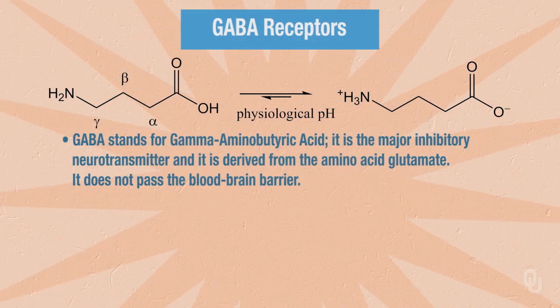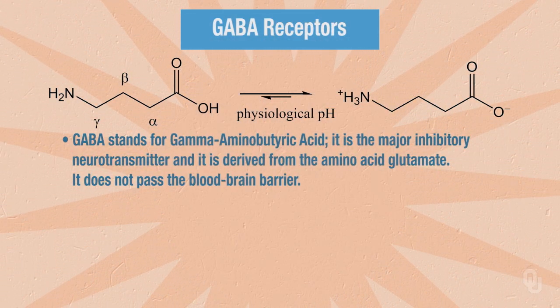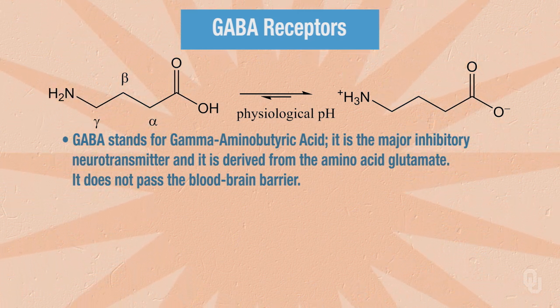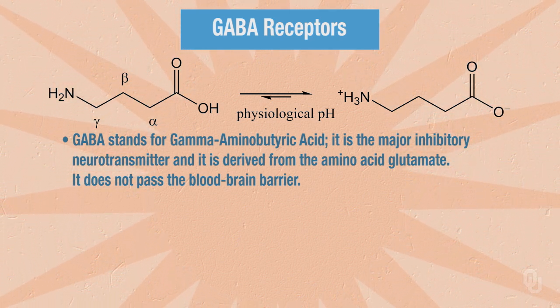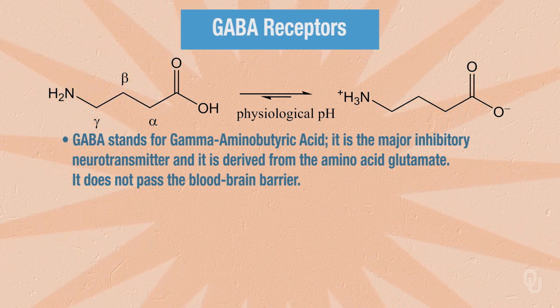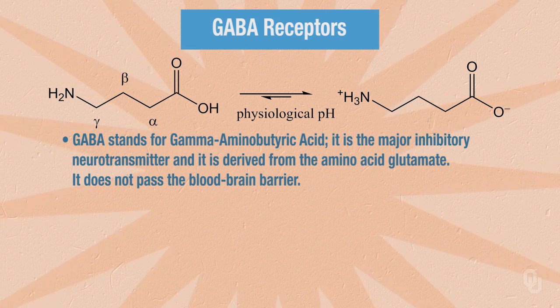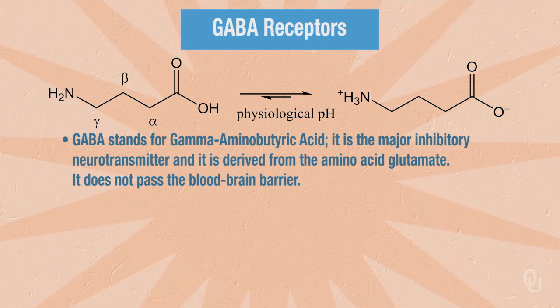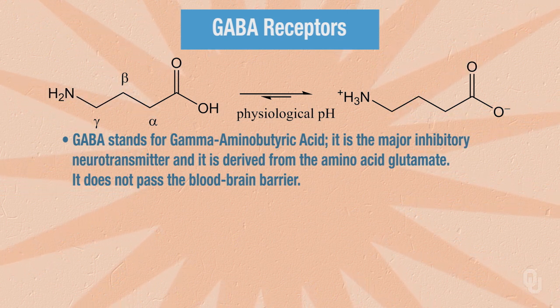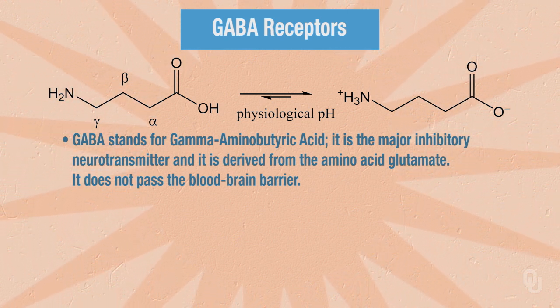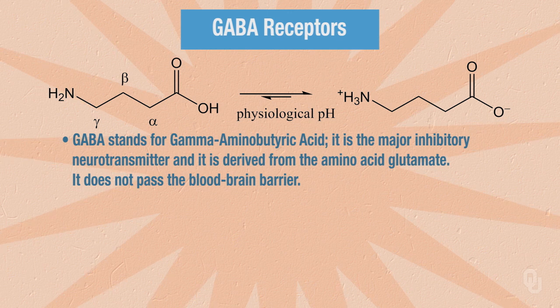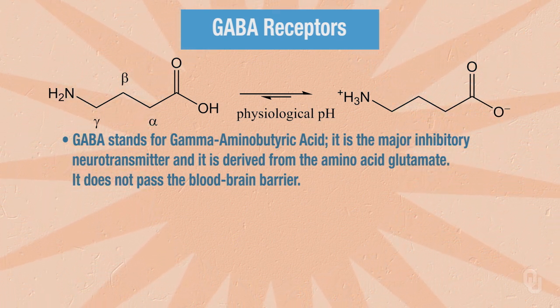The particular receptors we want to focus on are the GABA receptors. GABA stands for gamma-aminobutyric acid. It is the major inhibitory neurotransmitter, and it is derived from the amino acid glutamate. Interestingly, GABA does not pass the blood-brain barrier. Shown in our diagram is the structure of GABA. On the left is a very unlikely protonation state of GABA, and on the right is the more physiologically relevant protonation state.